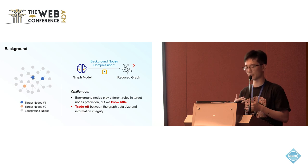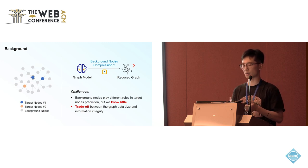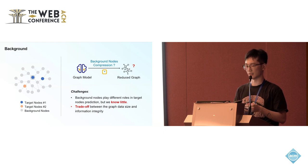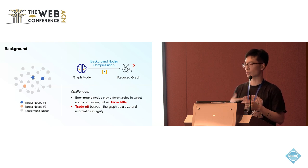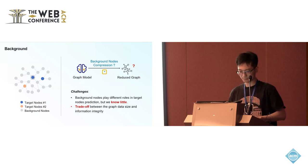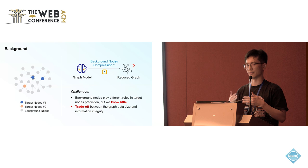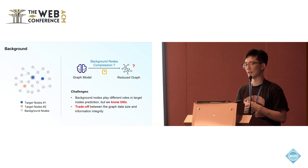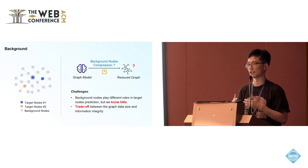A proper graph compression method — to compress the nodes we do not care about and then deploy graph models on this compressed data for model training and inference — would be a shortcut to handle this problem. In our problem, we term the nodes required to be classified as target nodes, while all other nodes are background nodes. However, background nodes can play diverse roles in target node classification, and there is a trade-off between compression rate and information integrity — that is the main challenge of our work.